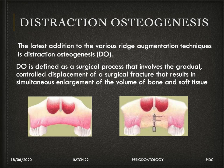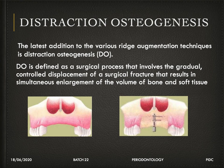Distraction osteogenesis — known from orthodontics — can also be used in periodontics for ridge augmentation. While in orthodontics the bone is moved mesiodistally, in periodontics the bone is moved apico-coronally, allowing vertical ridge augmentation to be achieved with this technique.